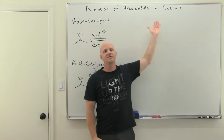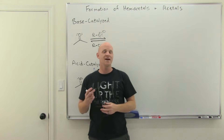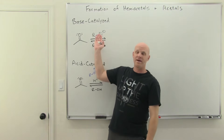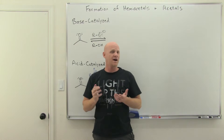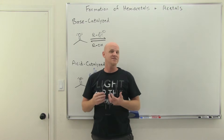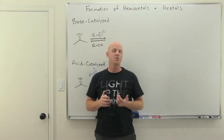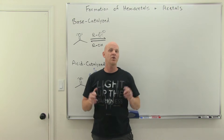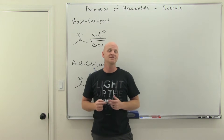Formation of hemiacetals and acetals is the topic of this lesson. This involves the addition of alcohols — our second oxygen nucleophile — to ketones and aldehydes. It can be base catalyzed or acid catalyzed. We'll go through the mechanisms of both, see some biological relevance, see that glucose often forms a cyclic hemiacetal, and look at the formation of a cyclic acetal using ethylene glycol as a protecting group for ketones and aldehydes.